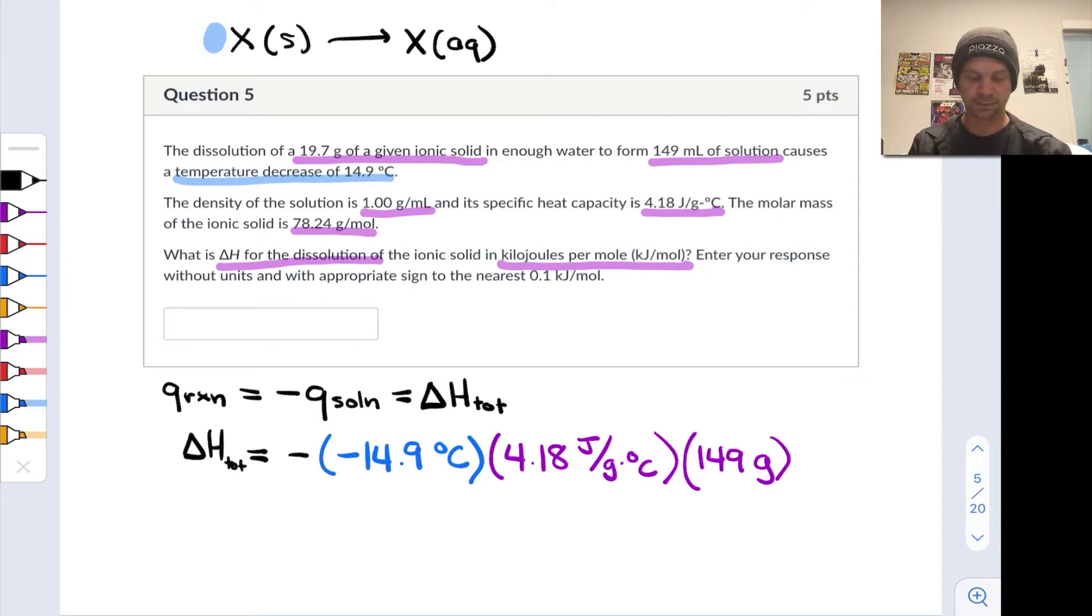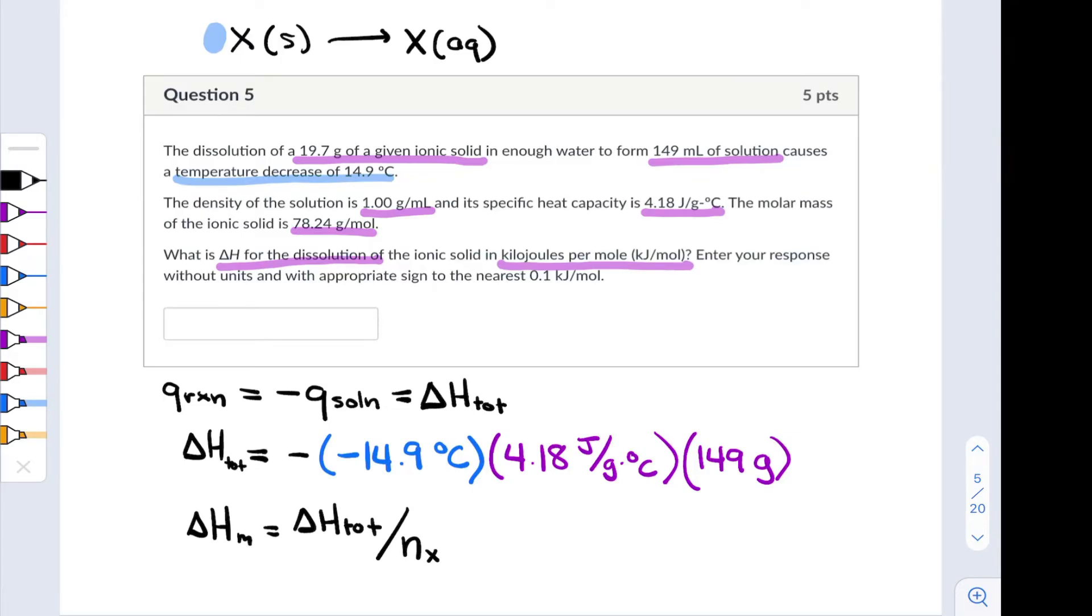If we want the molar delta H, let's call that delta H sub n for per mole. We're going to take delta H total and divide by the moles of ionic solid dissolved, the moles of X—let's call that n sub x.